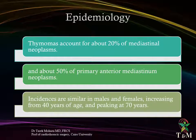Thymomas account for about 20% of mediastinal neoplasms and about 50% of primary anterior mediastinum neoplasms. Nevertheless, these are uncommon tumors, with an estimated overall incidence in the USA of 0.13 per 100,000 person-years. Incidence is similar in males and females, increasing from 40 years of age and peaking at 70 years.